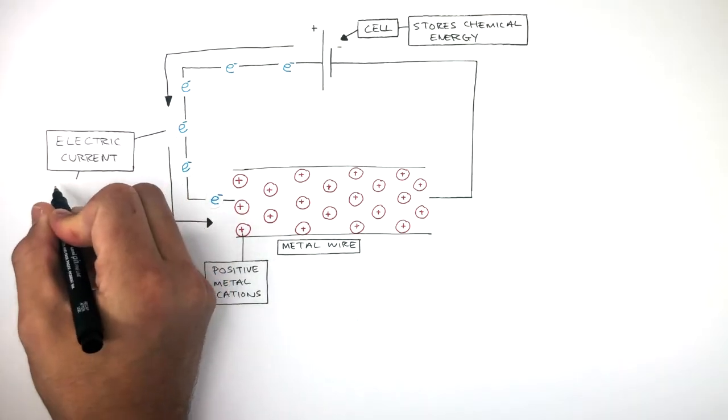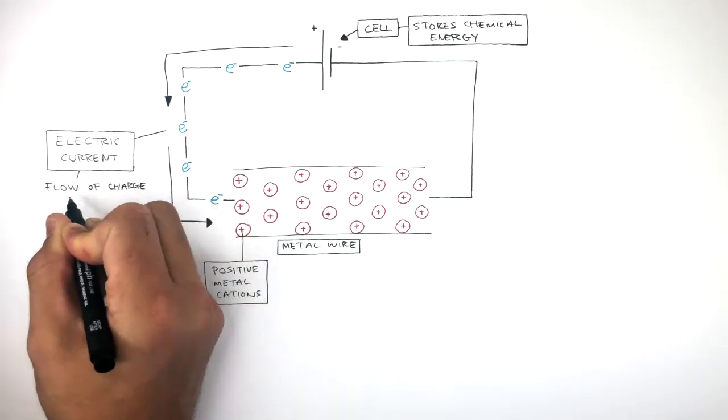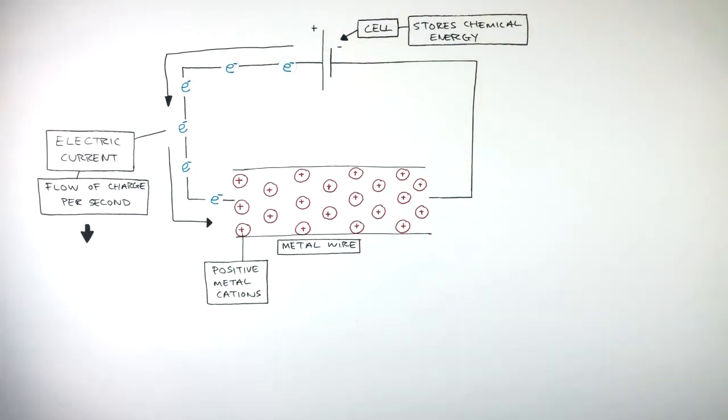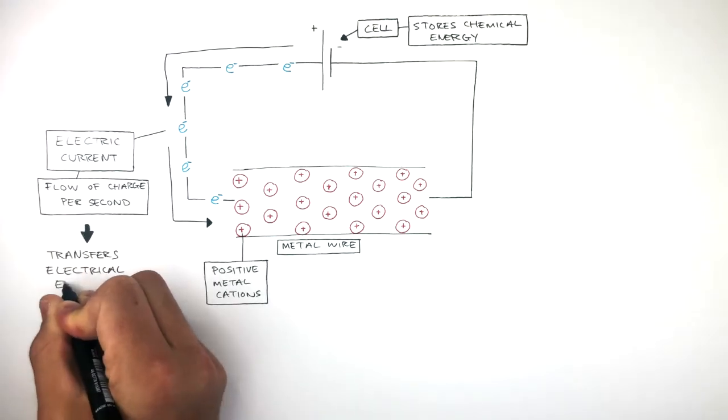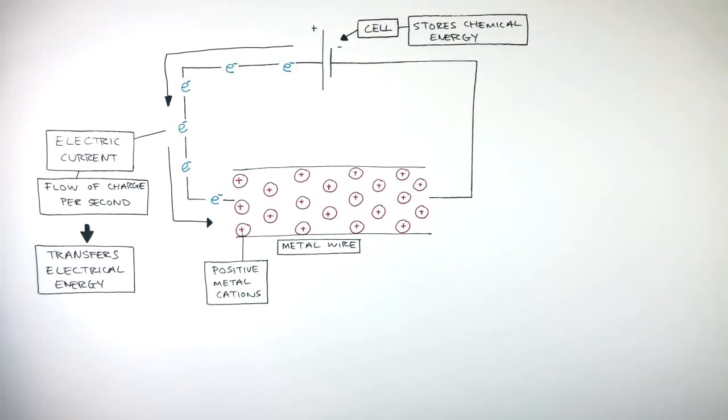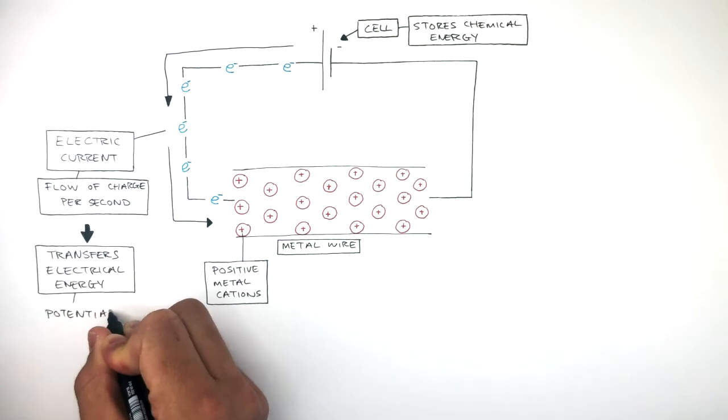The definition of electric current is the flow of charge per second. This flow of charge transfers electrical energy, and the electrical energy stored per coulomb is the potential difference.